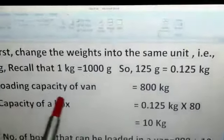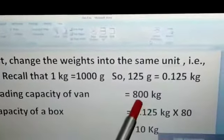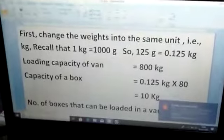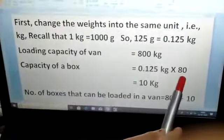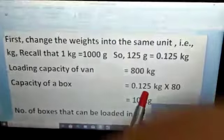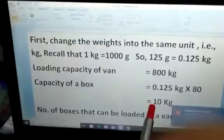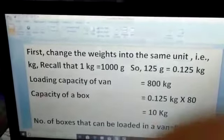In the question, the loading capacity of the van is given in kilogram, 800 kilogram. You have to find the capacity of box. Please remember, in that box there were 80 packets of biscuit and the weight of each packet of biscuit is 0.125. So the capacity of the box will be 10 kilogram.